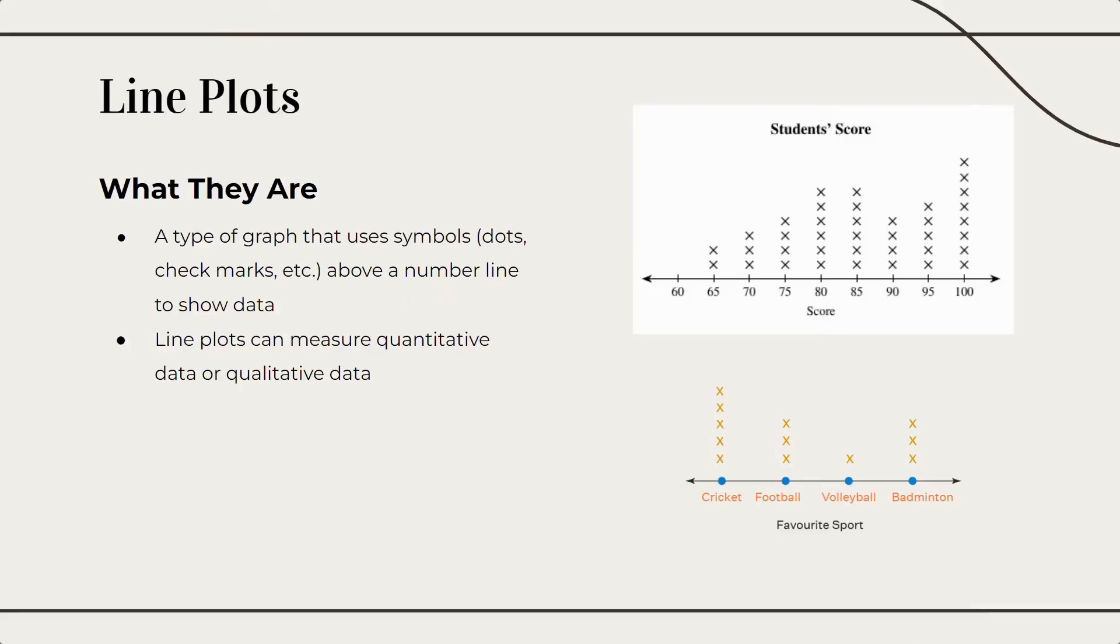Line plots are a type of graph that uses symbols above a number line to show data. Line plots can measure quantitative data, which is number-based, and qualitative data, which measures what type or kind of thing.